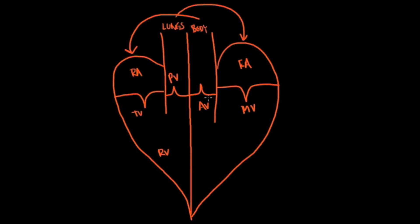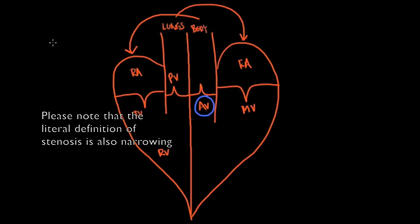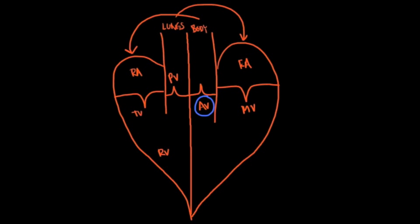The part we want to talk about specifically today is the aortic valve. Stenosis simply means closure, or the inability for this valve to open. So what are the possible causes of aortic stenosis?